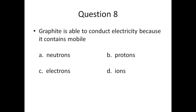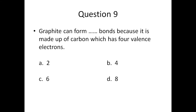Question eight: graphite is able to conduct electricity because it contains mobile — A) neutrons, B) protons, C) electrons, or D) ions. Question nine: graphite can form dash bonds because it is made of carbon which has four valence electrons — A) two, B) four, C) six, or D) eight.